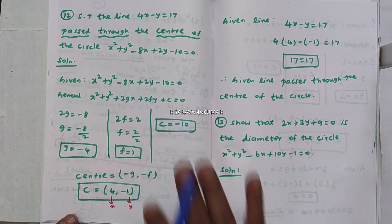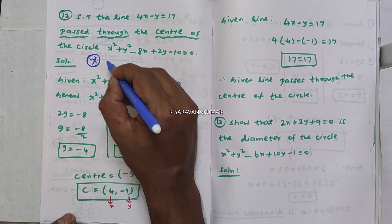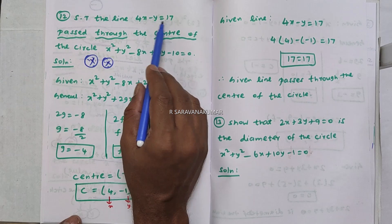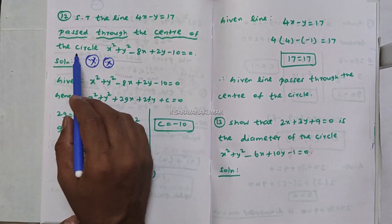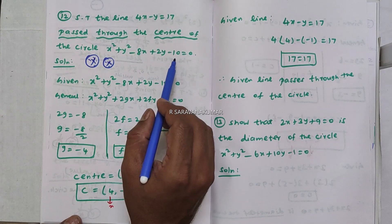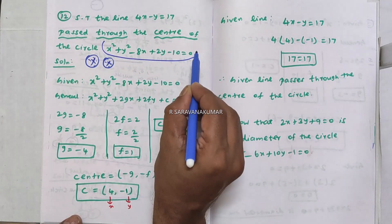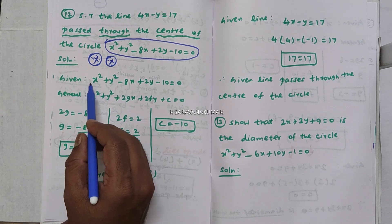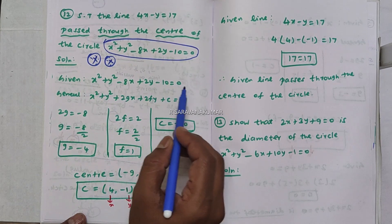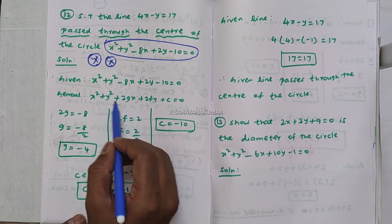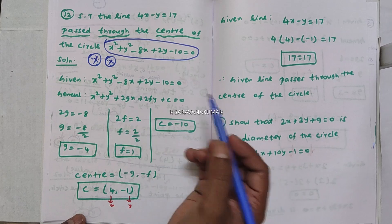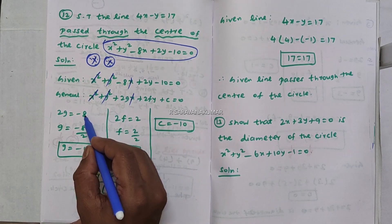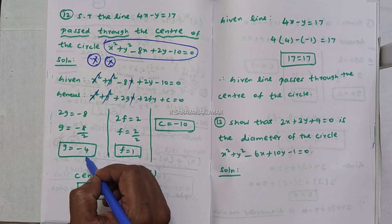An important exam question: show that the line 4x minus y equal to 17 passes through the center of the circle x squared plus y squared minus 8x plus 2y minus 10 equal to zero. Comparing with the general equation x squared plus y squared plus 2gx plus 2fy plus c equal to zero: 2g equals minus 8, so g equals minus 4.